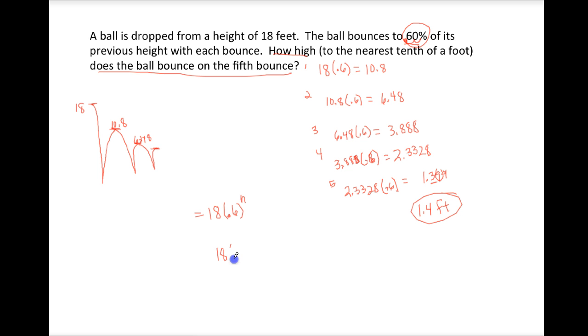Because notice what happened as we went through each step, we multiplied by 1, 2, 3, 4, 5 .6s, which is the same as .6 to the fifth. So you can do it this way as well.